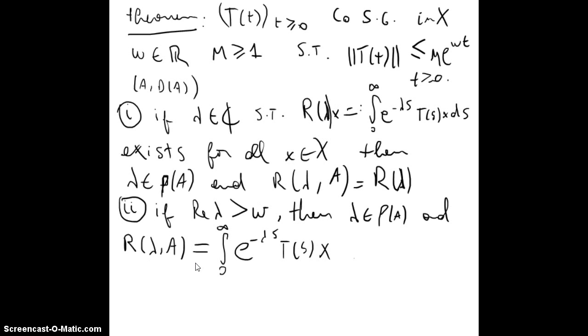And the third one is that the norm of R(λ,A) is less than or equal to M over (real part of λ minus ω), for all real part of λ greater than ω.